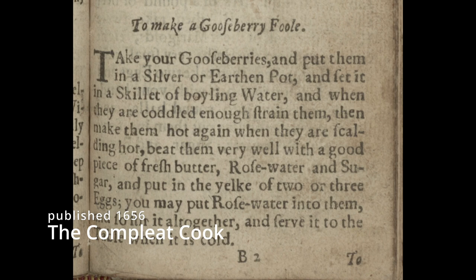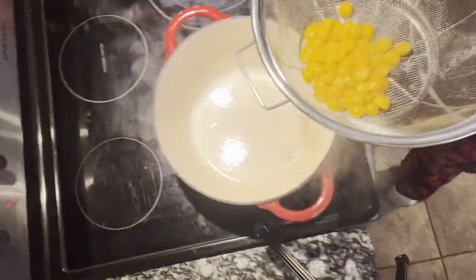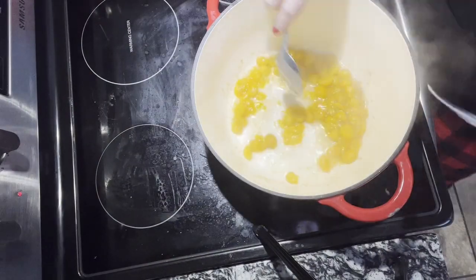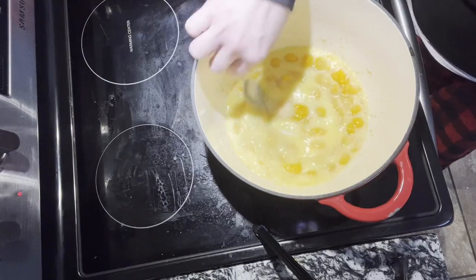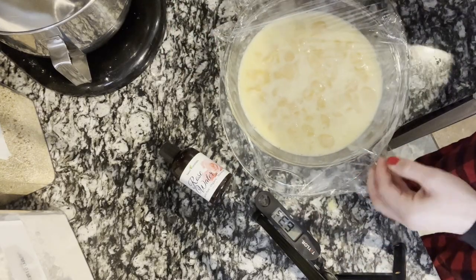Once coddled, drain off the water and return the gooseberries to the pot to get them hot again. The actual recipe says: 'When they are scalding hot, beat them very well with a good piece of fresh butter, rose water, and sugar, and put in the yolk of two or three eggs. Stir it all together and serve it on the table when it's cold.' To make sure we're killing any salmonella, I'm using a meat thermometer — cook the custard base until it reaches 160 degrees Fahrenheit. After the egg mixture was hot enough, I transferred it to a baking dish, covered it, placed it in the fridge to cool for a few hours, and then it's done.